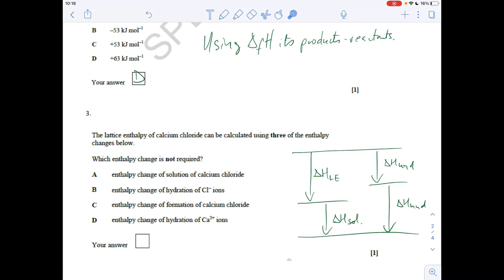OK, so number three. The lattice enthalpy of calcium chloride can be calculated using three enthalpy changes below. So it's obviously not the big full-blown Born-Haber cycles with the ionisation energy and electron affinity and atomisation. You can actually get lattice enthalpy from an enthalpy of solution cycle, which is why I've drawn that there. And you can see that to do that we need the enthalpy change of solution and the enthalpy changes of hydration of the positive and negative ions. So the one that we don't need is C, enthalpy change of formation.